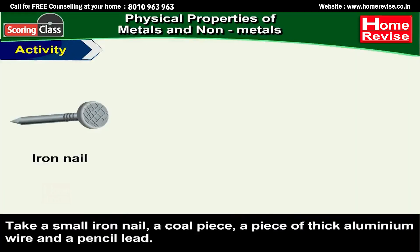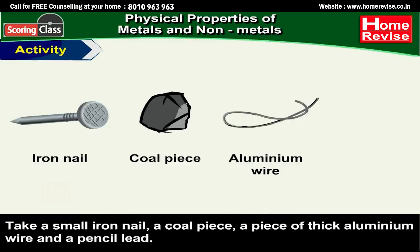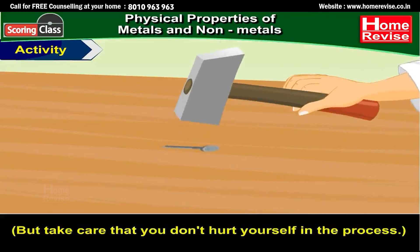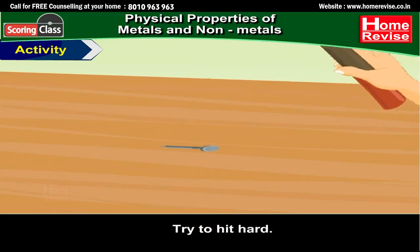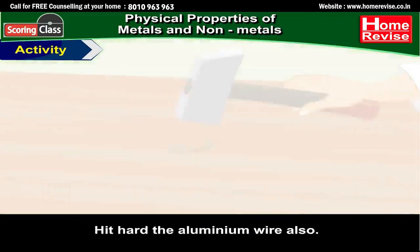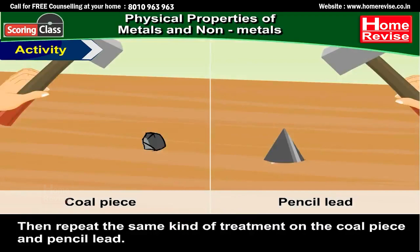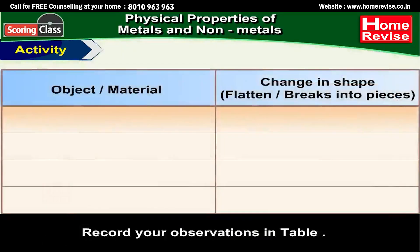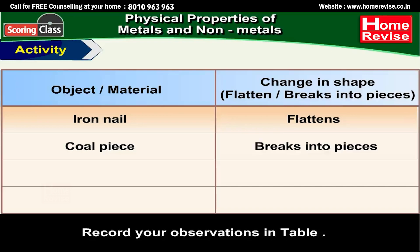Activity: take a small iron nail, a coal piece, a piece of thick aluminum wire, and a pencil lead. Now beat the iron nail with a hammer — do take care that you don't hurt yourself. Hit hard the aluminum wire also, then repeat the same on the coal piece and pencil lead. Record your observations: the iron nail when hammered flattens into a sheet, while a coal piece when hammered breaks into pieces.